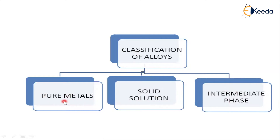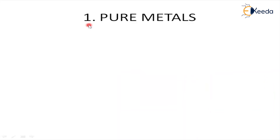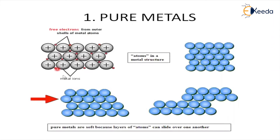Let us discuss one by one, starting with pure metals. Observe the image here — you can see metal ions represented with plus symbols, all arranged in a regular pattern. These small atoms are electrons, which are free electrons from outer shells of metal atoms, occupied at outer shells. All atoms are represented with the same shape and size, so automatically they can glide or slide one over another. This is the main property of pure metals.